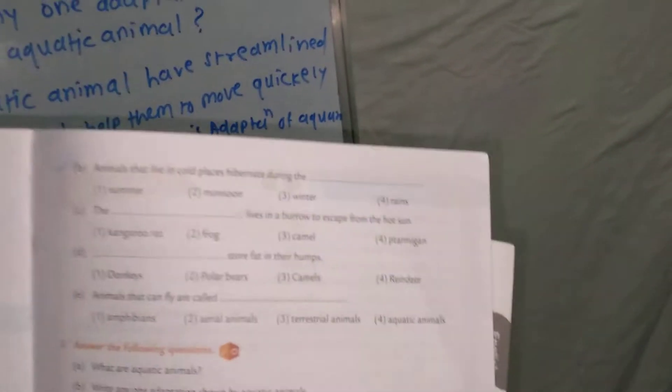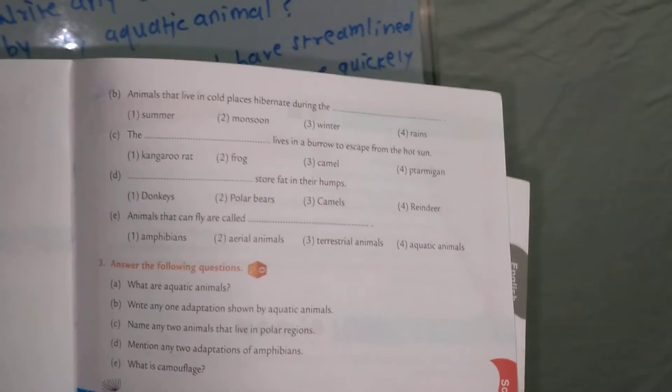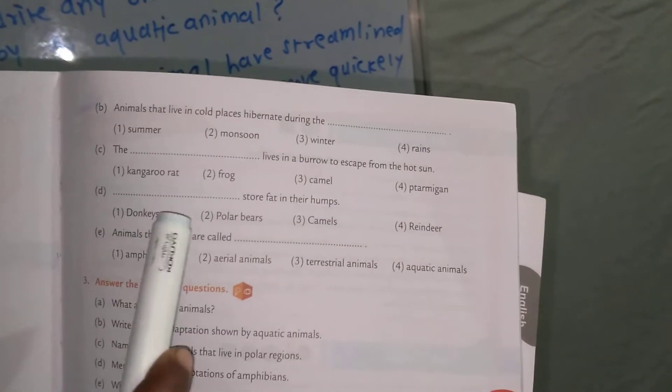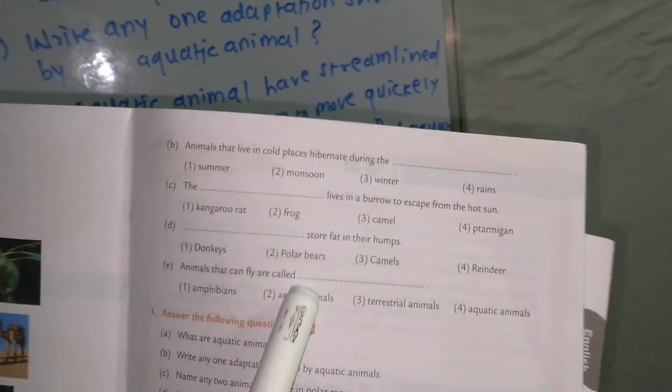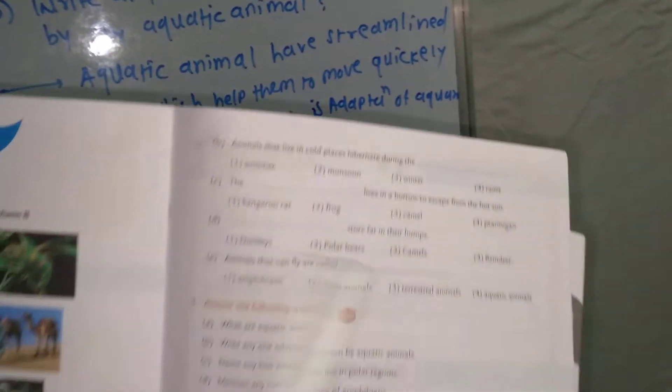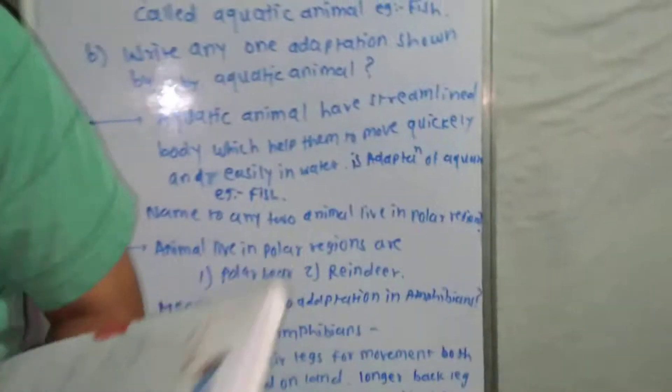Animals that can fly are called amphibians / aerial animals / terrestrial animals / aquatic animals. The correct answer is aerial animals. These are about the 'choose the correct answer' section. Now we move to the third section: answer the following questions.